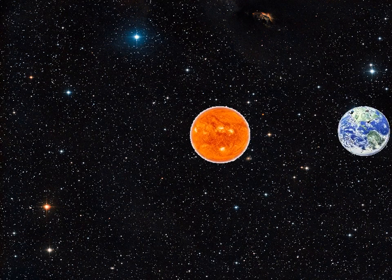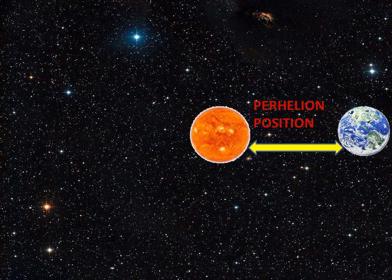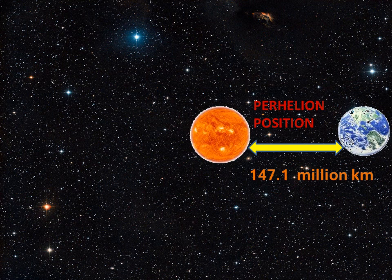When the earth is in perihelion position, that is the shortest distance between the earth and the sun. So, the distance between them will be 147.1 million kilometers.